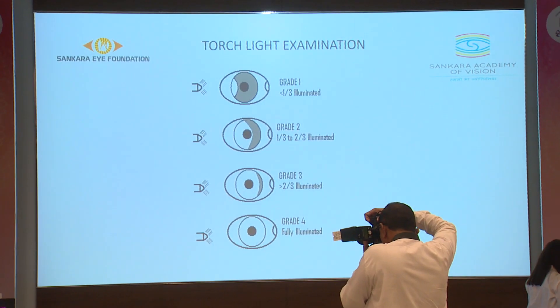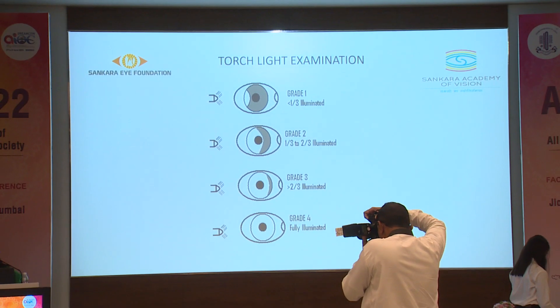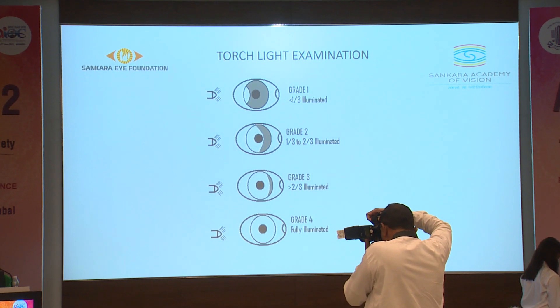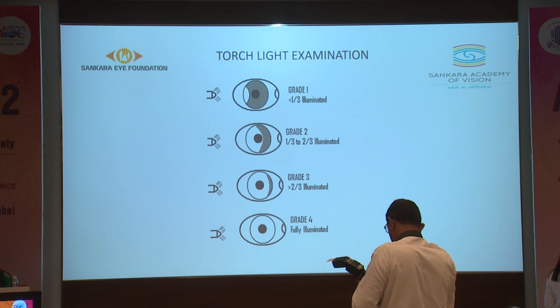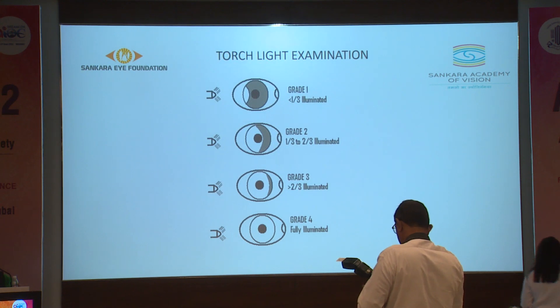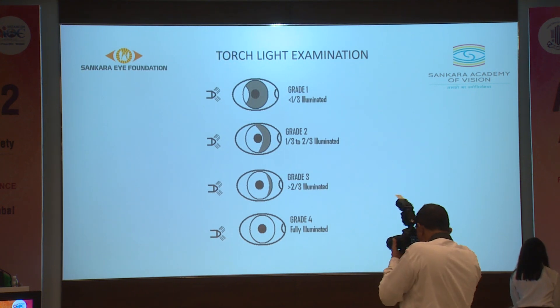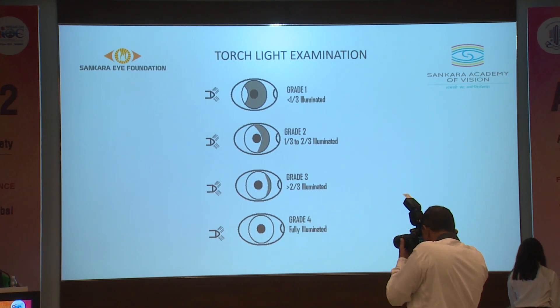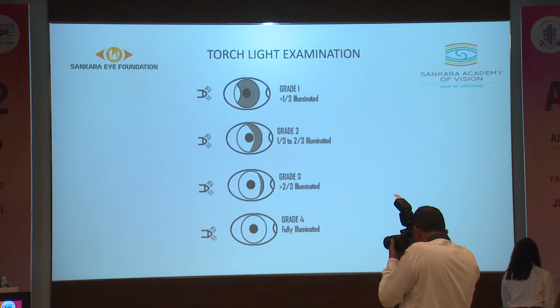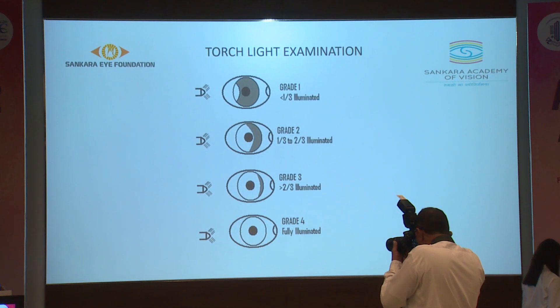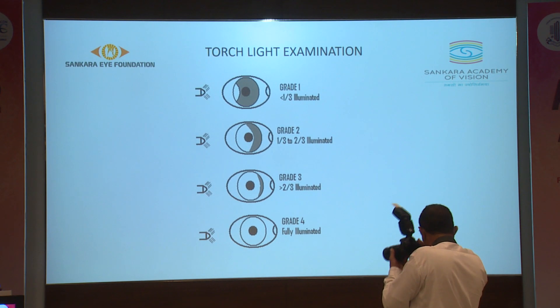Grade 1 is when less than one-third of iris is illuminated. Grade 2 is when one-third to two-thirds of iris is illuminated. Grade 3 is when more than two-thirds of iris is illuminated. And grade 4 is when a fully illuminated iris is seen.